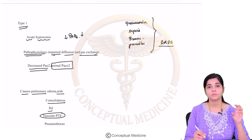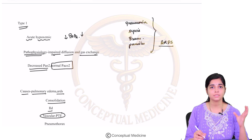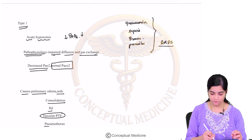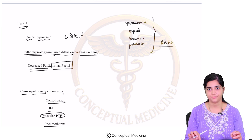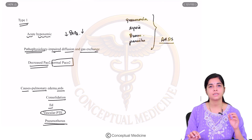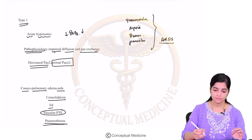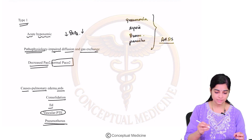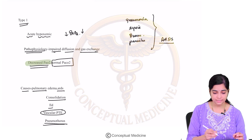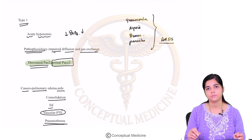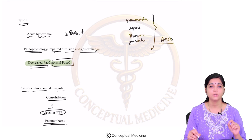When the vessels are blocked, gas exchange will be affected. Presence of a pneumothorax is also an example. All of these are examples of type 1 respiratory failure. Remember the key word: decreased PaO2, normal PCO2.